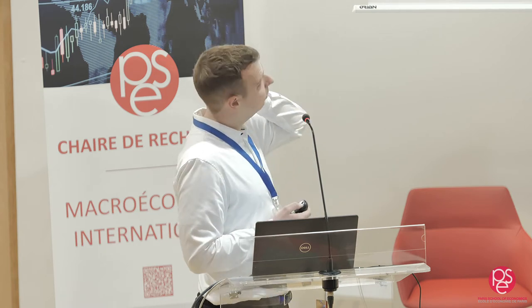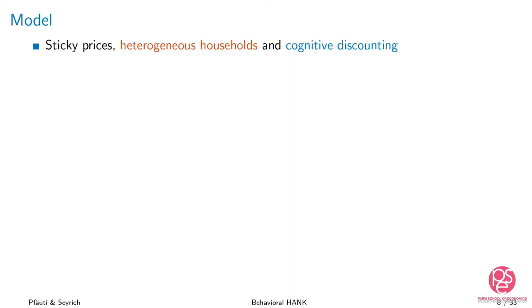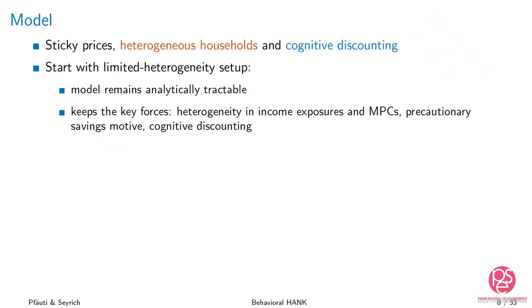The talk will proceed as follows: I will first cover the tractable model with the limited heterogeneity setup and show the analytical results, then move to the full heterogeneity setup, and finally talk about monetary and fiscal policy interactions. The model is a New Keynesian model with sticky prices, monopolistic competition, heterogeneous households, and cognitive discounting. The goal of the limited heterogeneity setup is to have analytical results while keeping the model insightful.